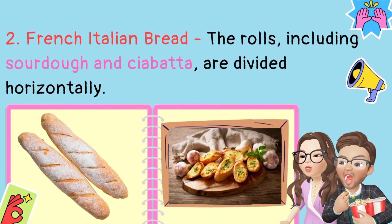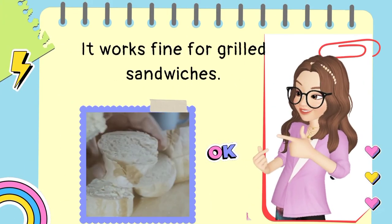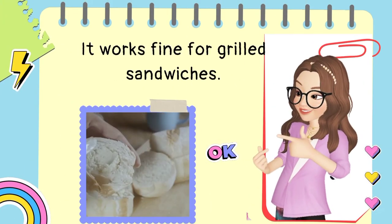2. French/Italian bread — the rolls, including sourdough and ciabatta, are divided horizontally. It works fine for grilled sandwiches.